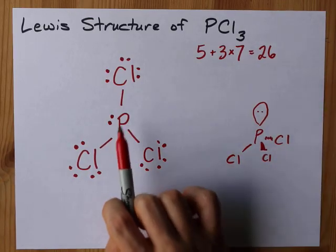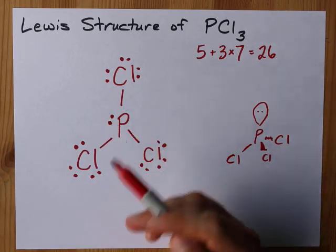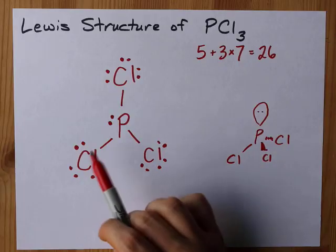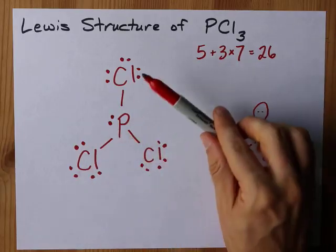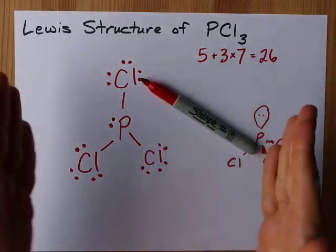The point here is that this is the complete Lewis structure. The phosphorus has a lone pair on it, and each of the chlorines is single bonded to it. Best of luck to you. Peace.